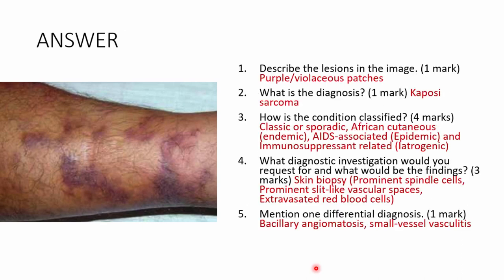The lesions are violaceous (purple) patches — greater than 0.5 cm, so we call them patches rather than macules (which are less than 0.5 cm). The most likely diagnosis is Kaposi's sarcoma.